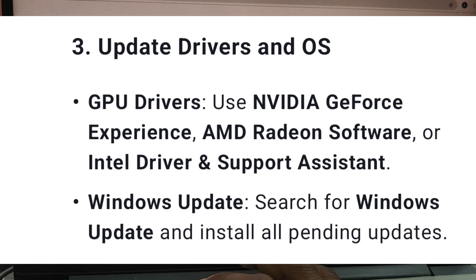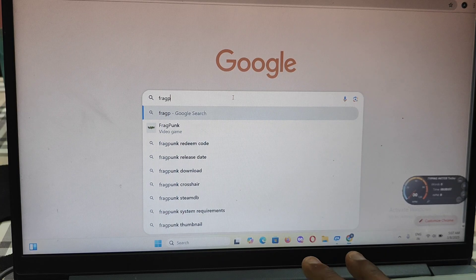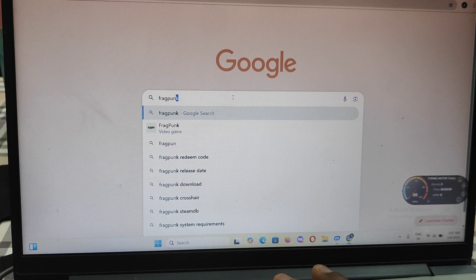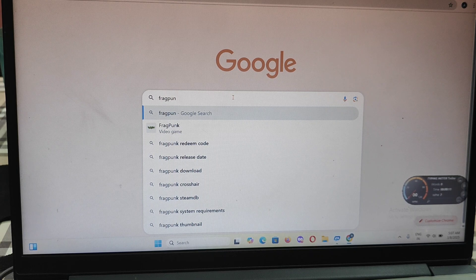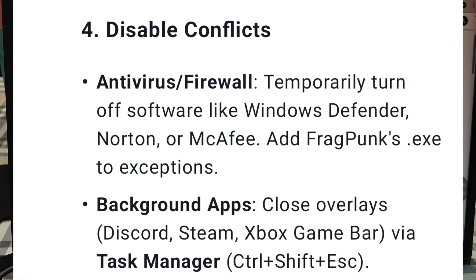Disable conflicts. For antivirus and firewall, temporarily turn off software like Windows Defender, Norton, or McAfee, and add Fragpunk.exe to exceptions. For background apps, close overlays such as Discord, Steam, and Xbox Game Bar using Task Manager (Ctrl + Shift + Esc).